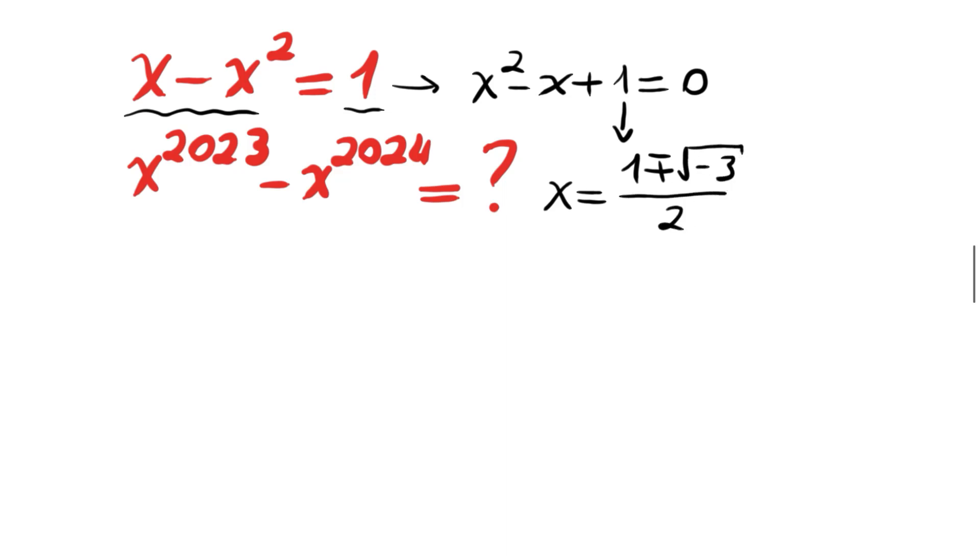But these values are not easy to use to calculate this wanted expression x to the 2023 minus x to the 2024. We will use another method. Let's write x squared minus x plus 1 equals 0 again.